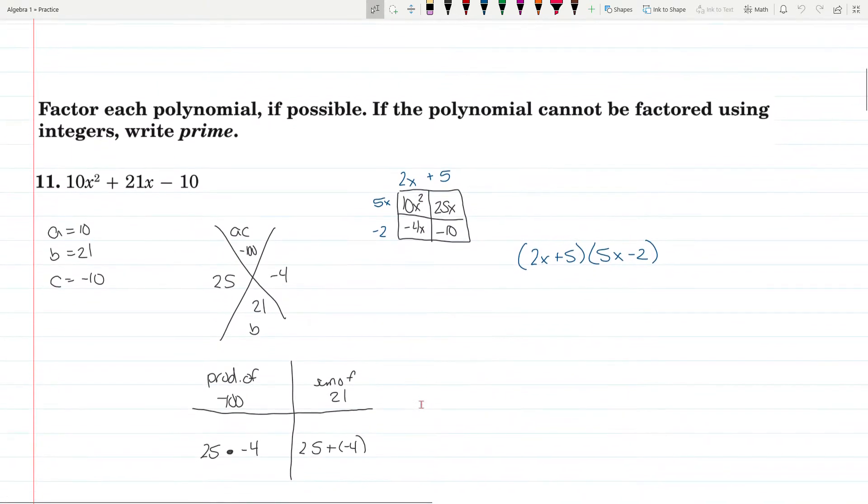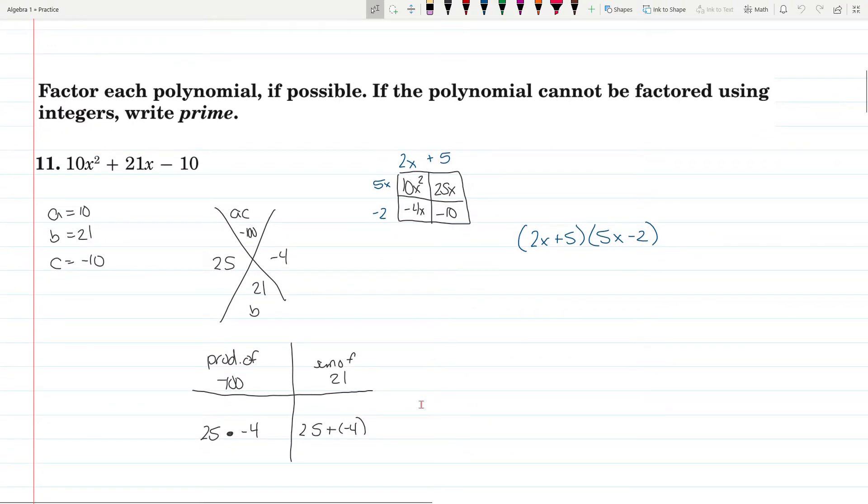Luckily, that's the only one. As we go through these, for problem 11: A is 10, B is 21, C is negative 10. So A times C is negative 100, B is 21.